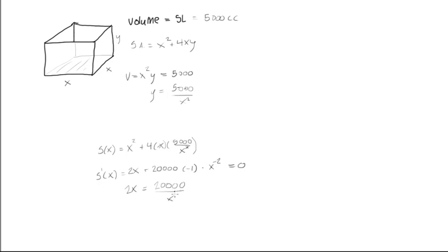And now we'll multiply both sides by x squared to put it over here and we'll get 2x cubed is equal to 20,000. And then we'll find that x cubed is equal to 10,000.